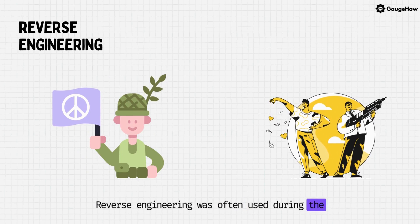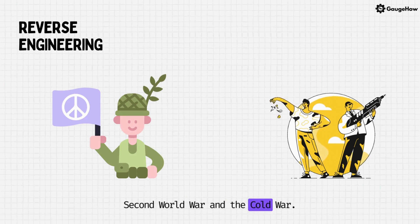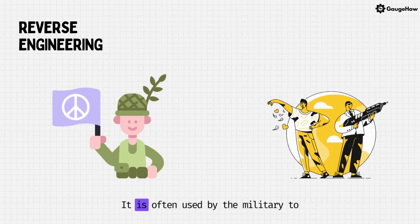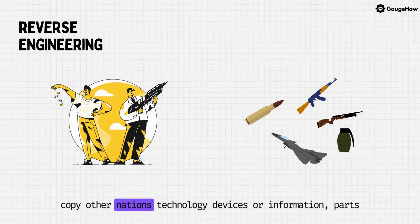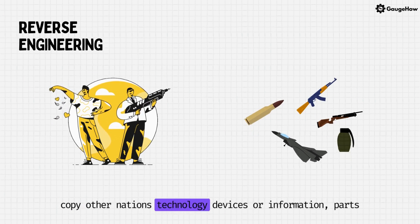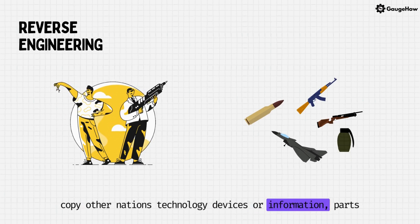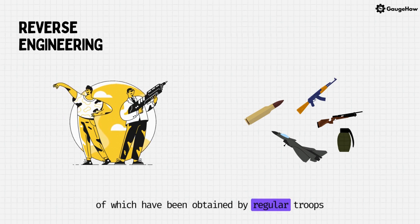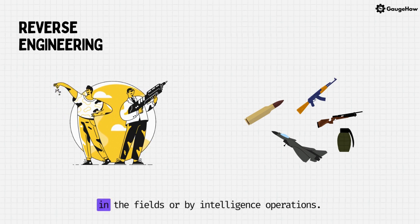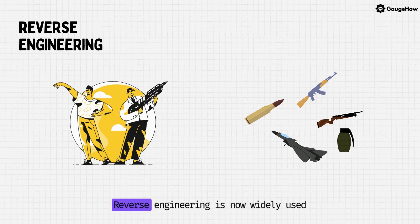Reverse engineering was often used during the Second World War and the Cold War. It is often used by the military to copy other nations' technology, devices or information, parts of which have been obtained by regular troops in the fields or by intelligence operations.